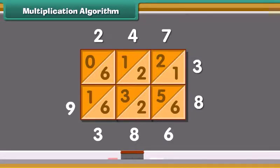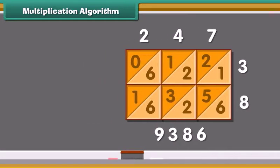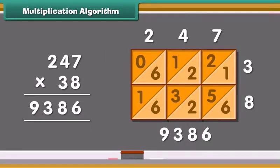1 plus 6 plus 1 is 8. Add 1 carry to the answer. We get 9, and 0 is 0. We get the answer: 09386. Thus, we have the answer of 247 into 38 as 9386.